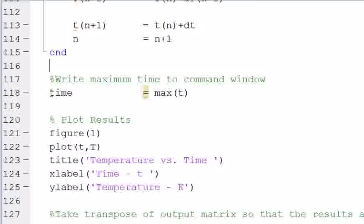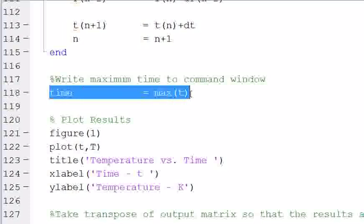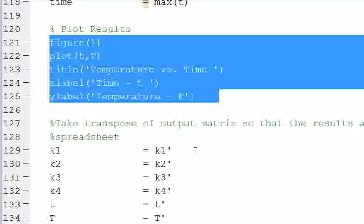And then we're going to redefine our time for the next time step, and then increase our counter by 1, and then end the script. And then, so to find out how long it takes for our material to increase to the second temperature, we're going to calculate the max in T. So we're going to write this to the command window, and then we're going to plot the results. It's a simple plotting scheme.